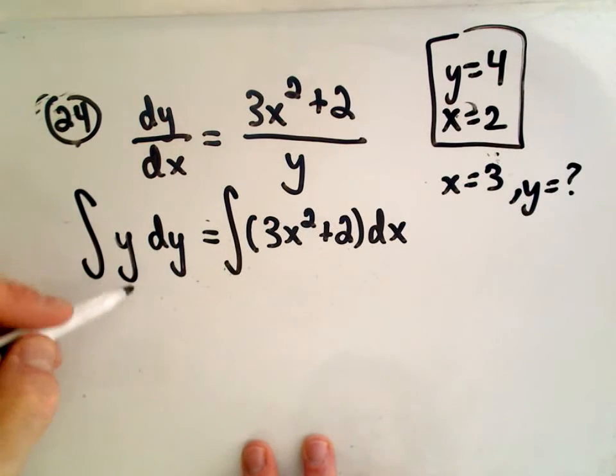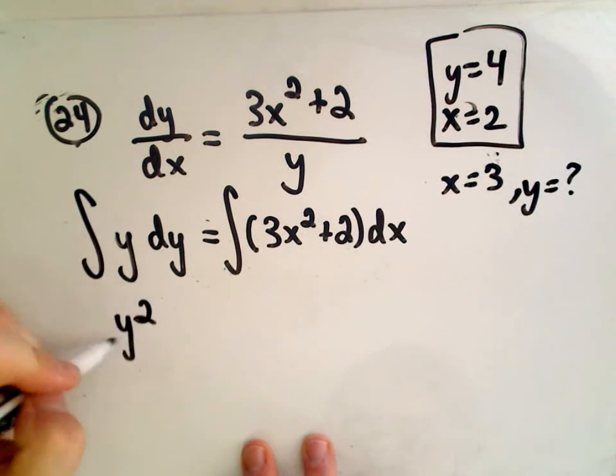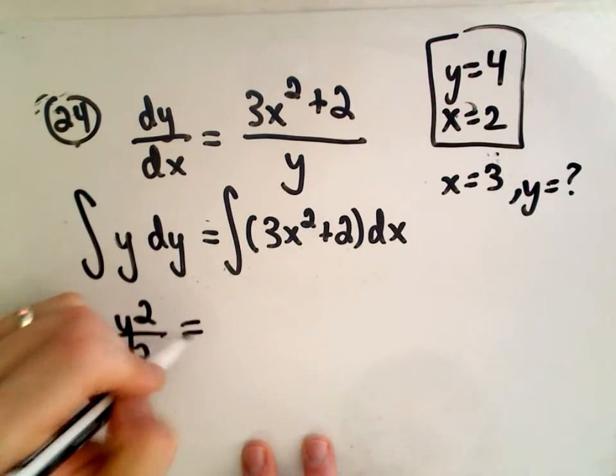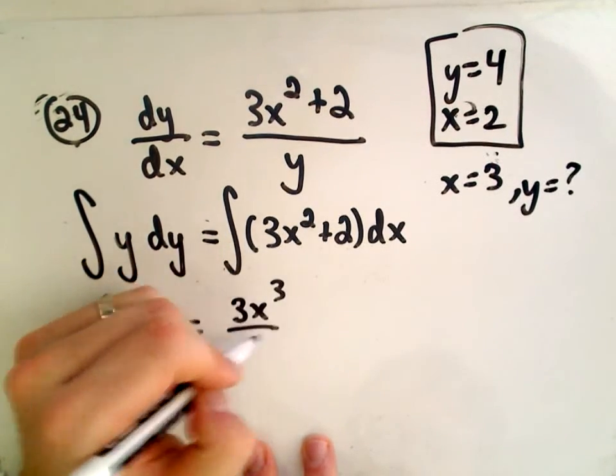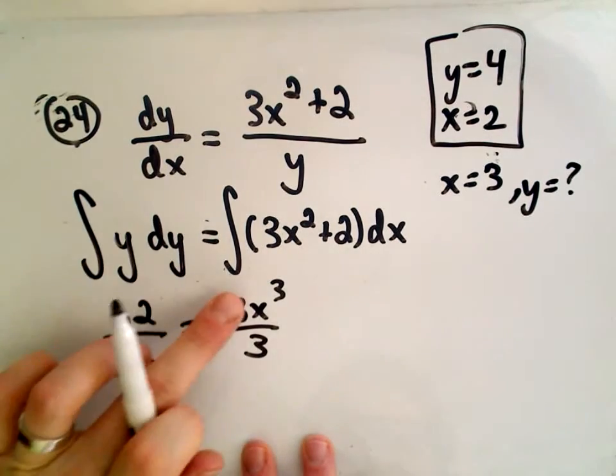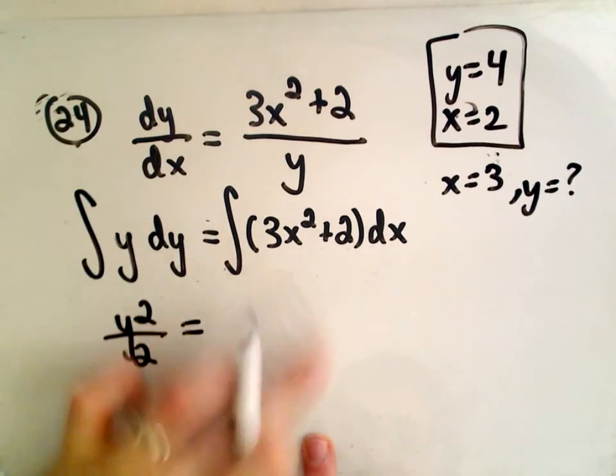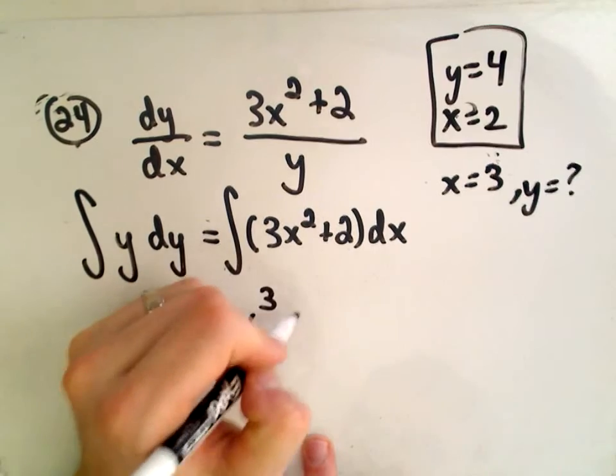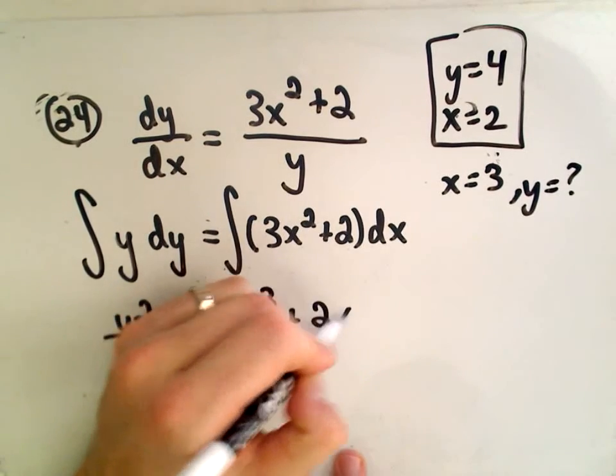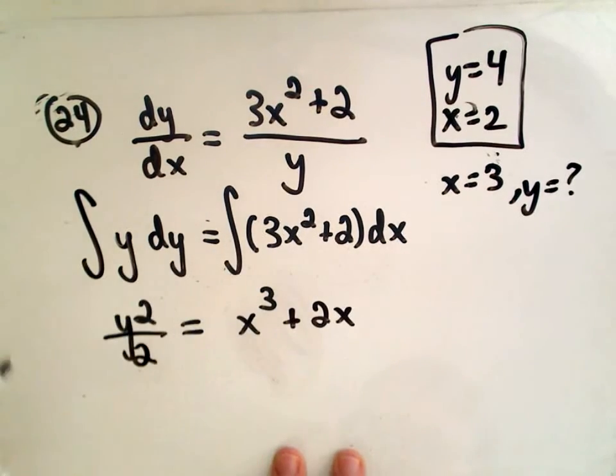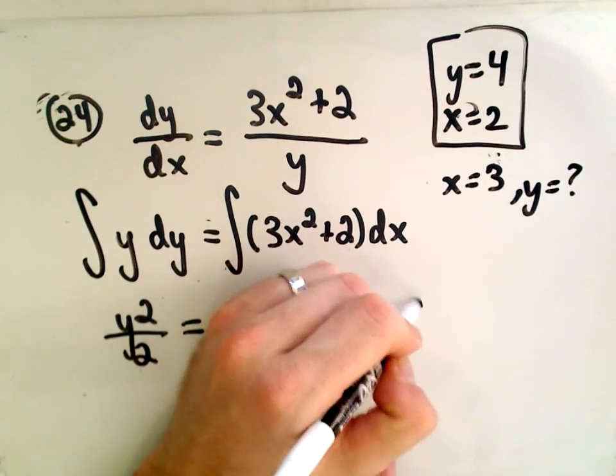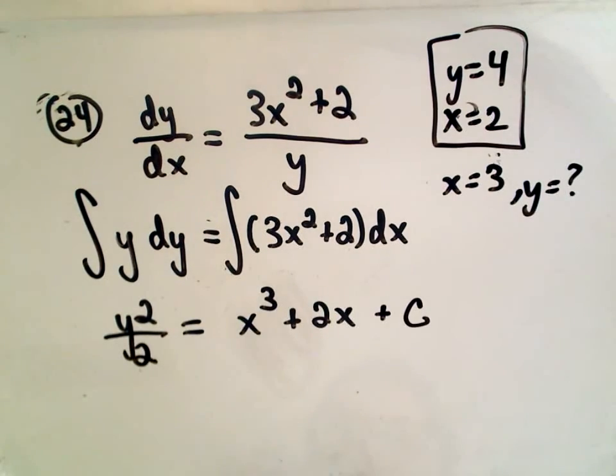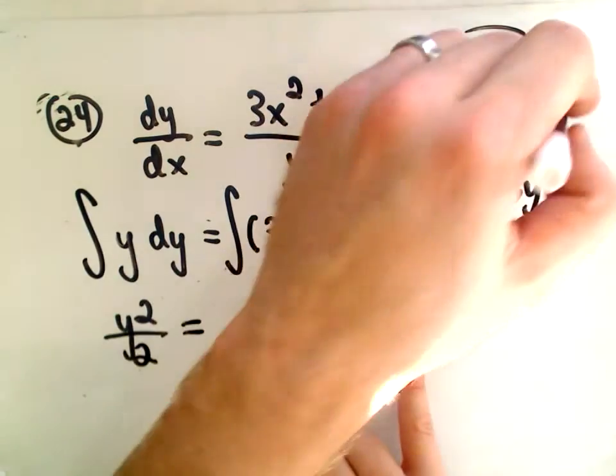Okay, so if we integrate y dy, we're going to get y squared over 2. And if we integrate 3x squared, we would get 3x cubed over 3, or simply x cubed would be our anti-derivative. And then the anti-derivative of 2 would be 2x. It doesn't matter which side you do it, but you have to stick an arbitrary constant on one side or the other.